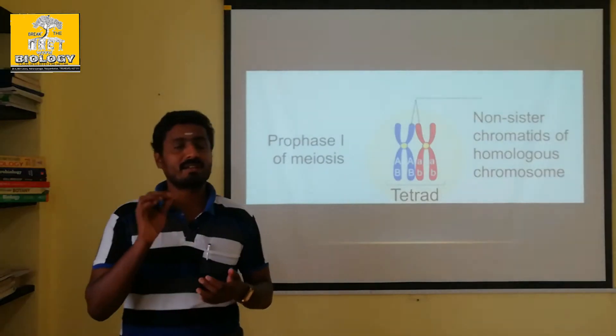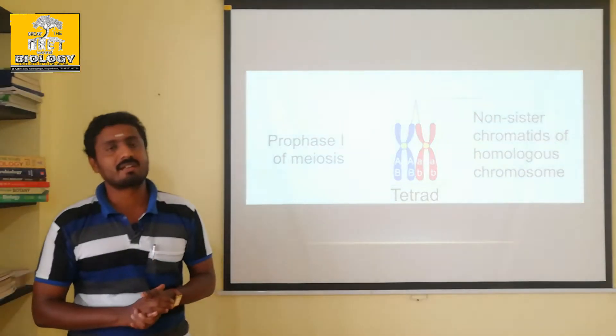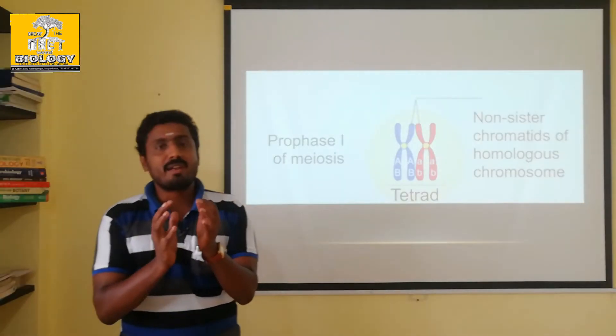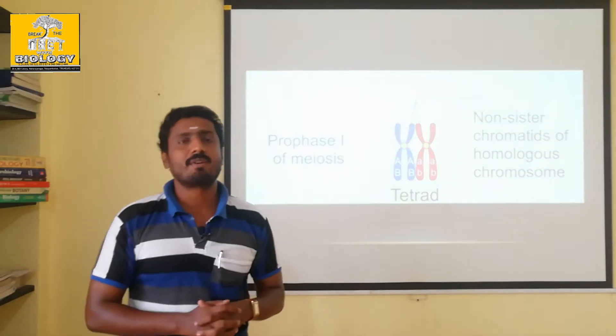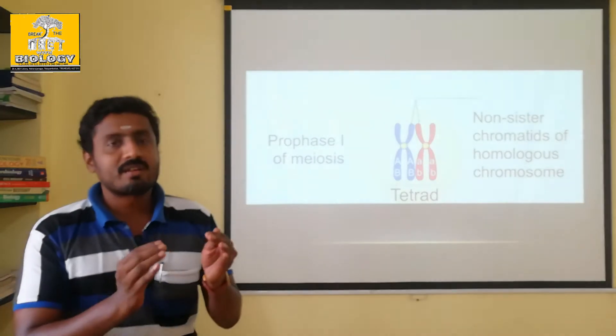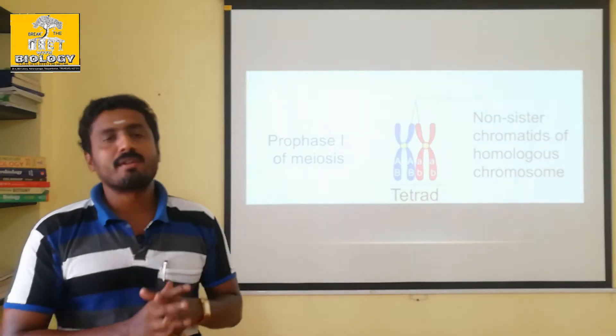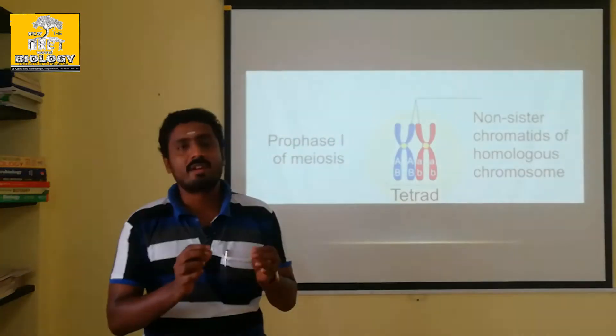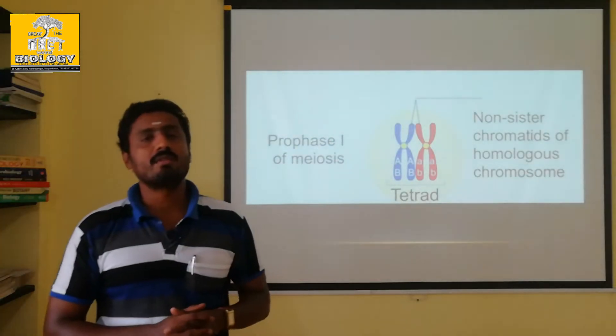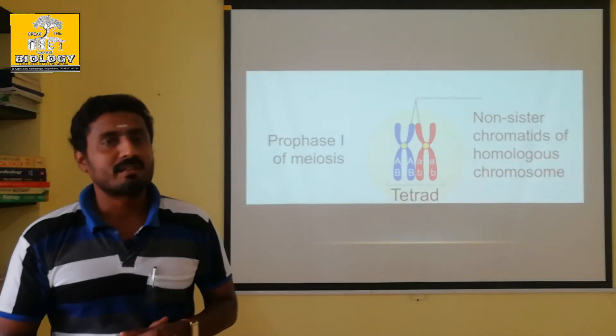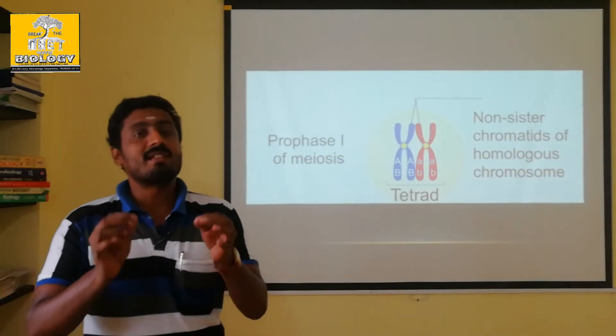It is a recombinant character. So the recombinant character — recombination — what is the form of a function? Crossing over is a function. That's how we see it.